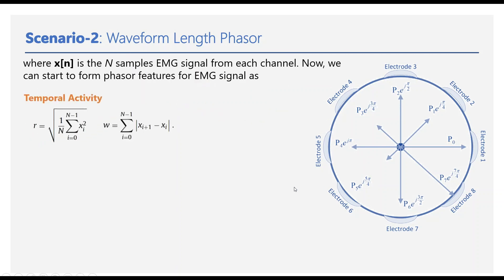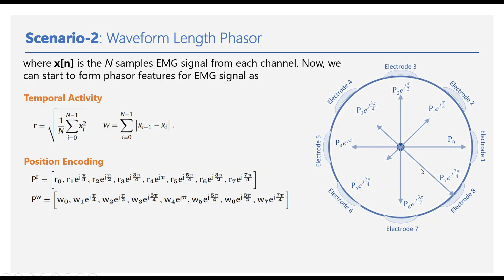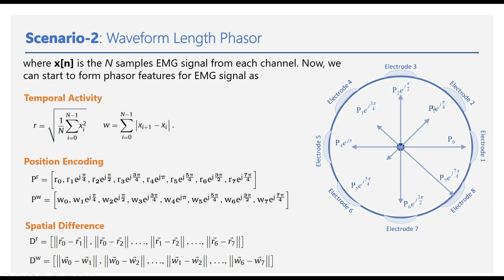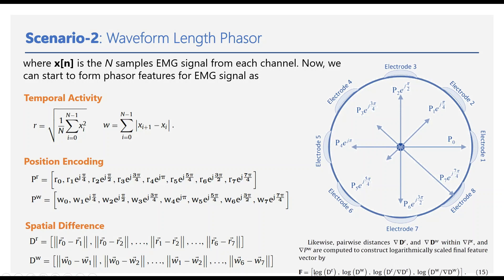The authors extract RMS and waveform length features from each of the eight channels — calling them r0 to r7 and WL0 to WL7 — then multiply each by the corresponding phasor component to implement position encoding. After that, they implement spatial differencing by subtracting each channel from all remaining channels (1 minus 2, 1 minus 3, etc.) for all channel combinations, for each feature. The last feature set is the logarithmic version of the difference in RMS values and the difference of WL values, then repeated on the derivative of the EMG signals with the ratio taken as another feature component.